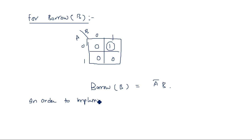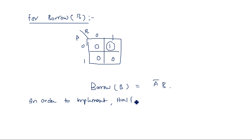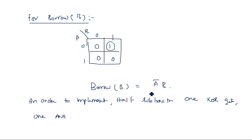In order to implement the half subtractor, the gates we need are: one XOR gate, one AND gate, and one NOT gate — because A-bar·B requires a complement of A.